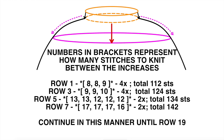In row 3, I'm now working with 112 stitches, so I do the same calculation: 112 divided by 12 gives 9.3, so increase about every 9 or 10 stitches. I figured out by calculation that I have to increase after 9 stitches, then after 9, then after 10 — repeating 4 times. After all increases, I finish with 124 stitches.